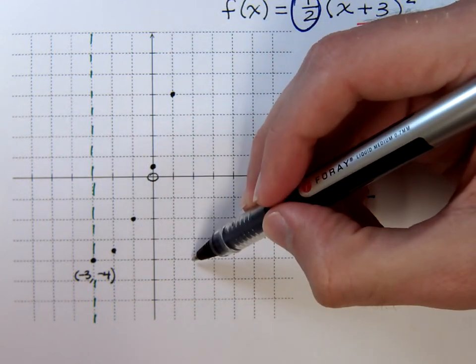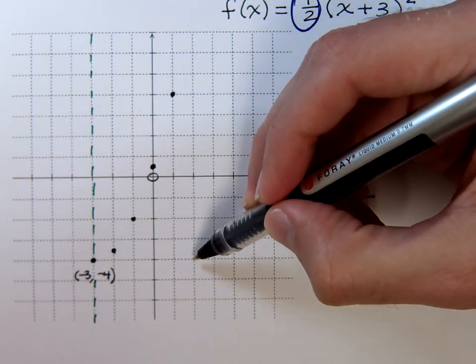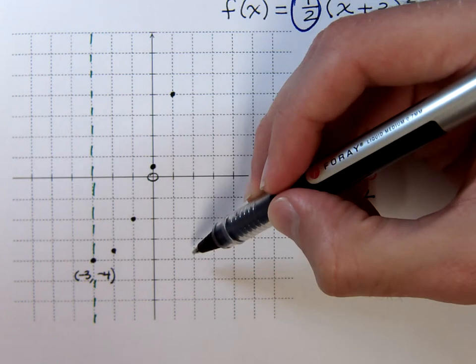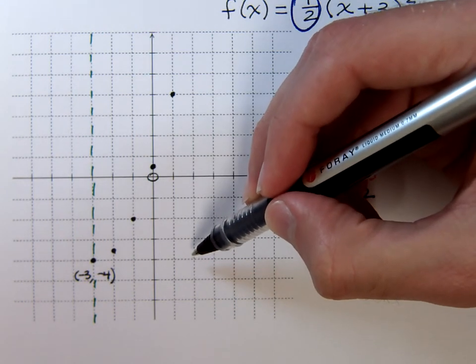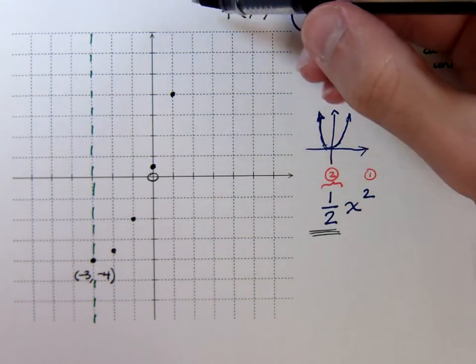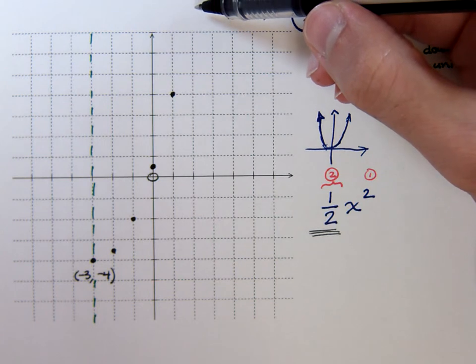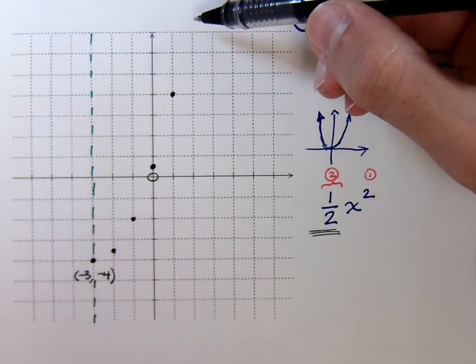If I went up here five units, I'd square that to get twenty-five, and then half of twenty-five would be twelve and a half. So, that's going to take me way up off this graph, and I'm not going to be able to fit that on here.